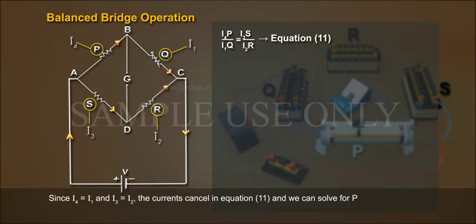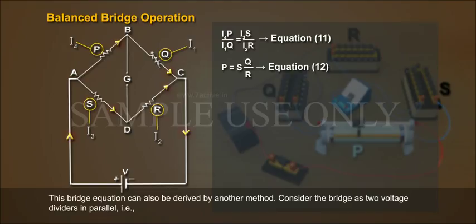Since I4 equals I1 and I3 equals I2, the currents cancel in equation 11 and we can solve for P. Equation for the unknown resistance at balance: P equals S times Q by R, Equation 12.